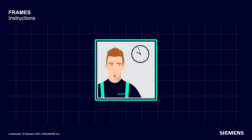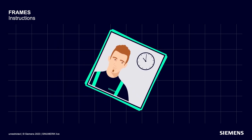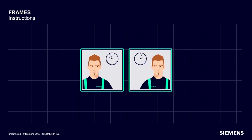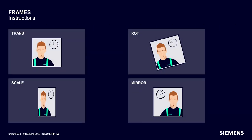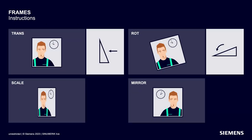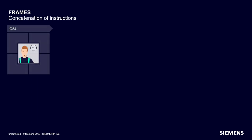Let's imagine a digital photo. You can simply shift it or rotate it, or the photo can be scaled or even mirrored. And this is exactly what you can do with the four frame instructions: trans, rote, scale and mirror — in other words, shift, rotate, scale and mirror. These frame instructions can, of course, also be concatenated.